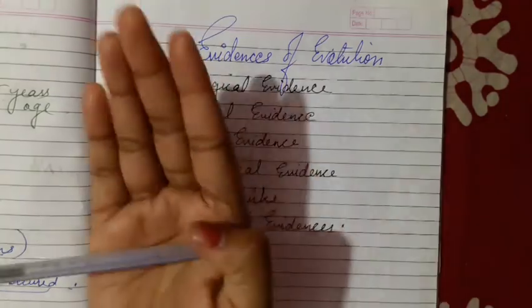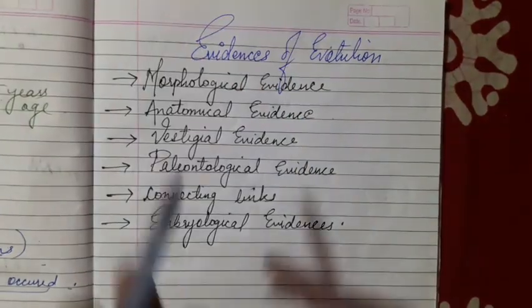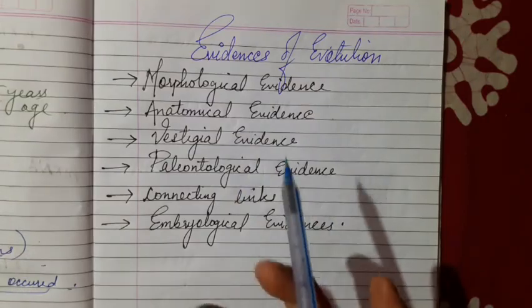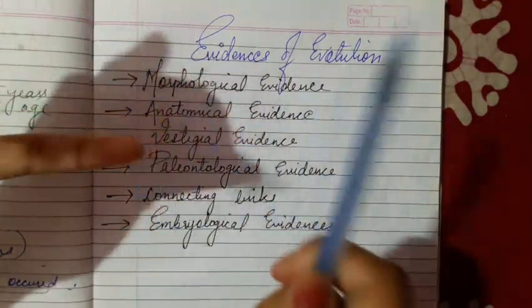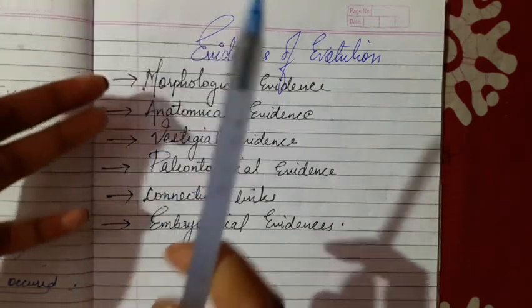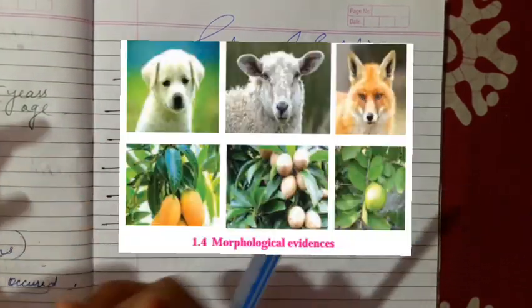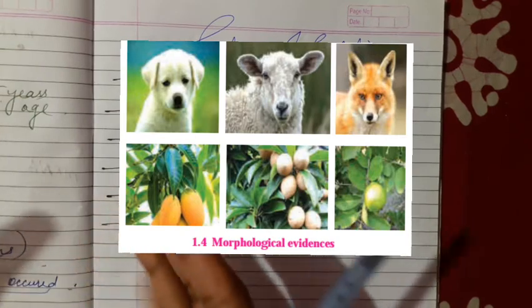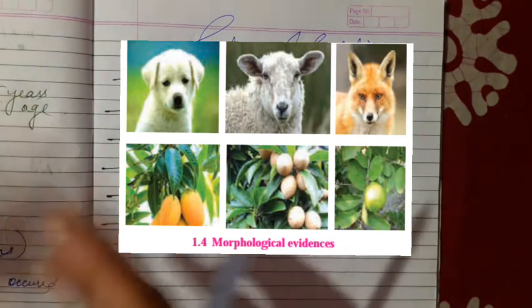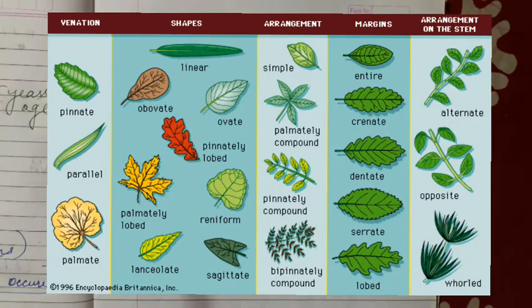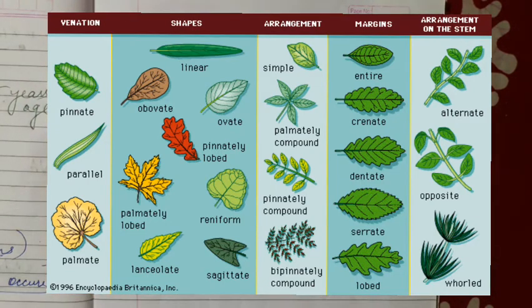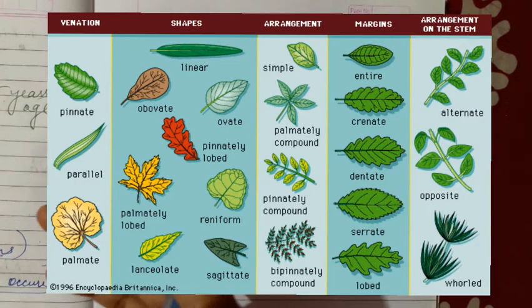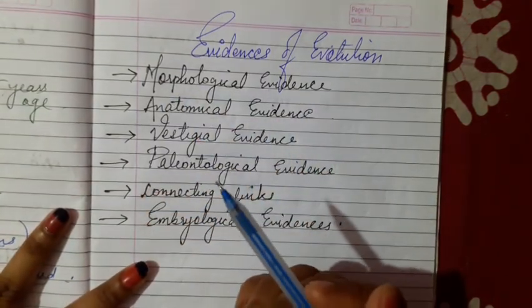The morphological evidence means that just by looking at animals or plants, we can say that they have certain similarities — for example, the structure of the mouth, the position of the eyes, the structure of nostrils, and the shape of the head. In plants, same leaf shape, leaf venation, and the petiole also show similarities, indicating they might have a common ancestor.